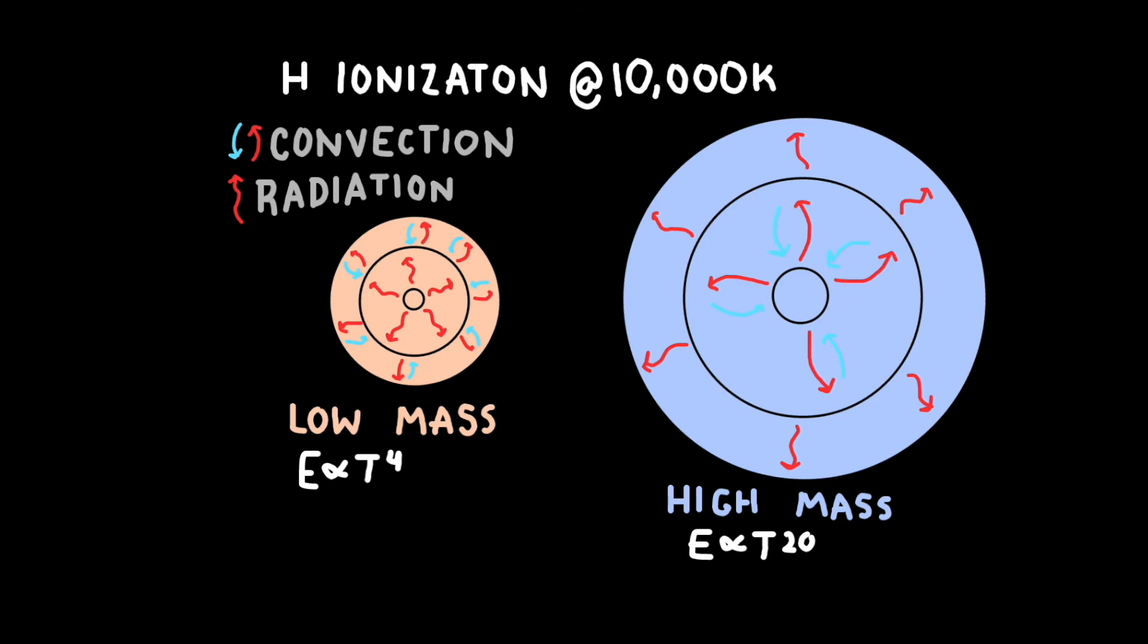Low to intermediate mass stars, that is from about 0.5 to 1.5 solar masses, have a radiative layer enveloped by a convective layer.